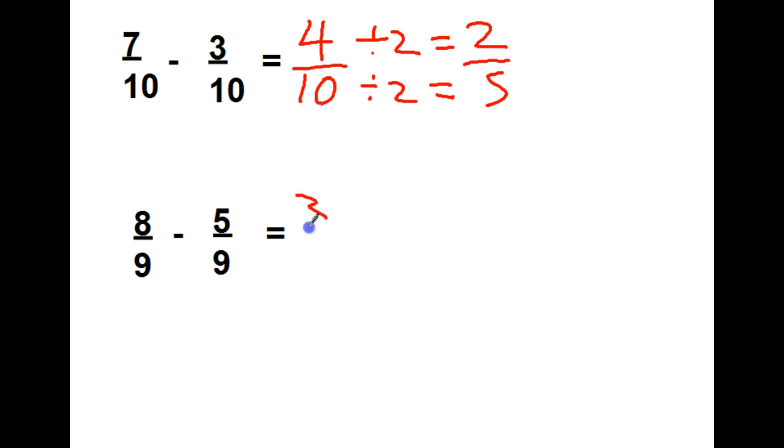8 minus 5 is 3. 9 stays the same for my denominator. 3 ninths. Can I divide them both by the same number? Yes, I can divide both of those by 3. So 3 divided by 3 is 1. 9 divided by 3 is 3. So 8 ninths minus 5 ninths equals 1 third.